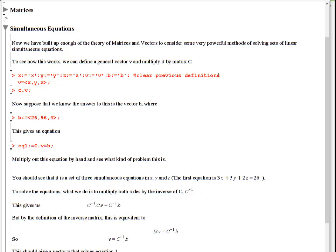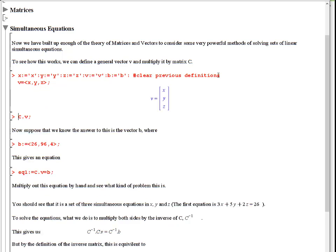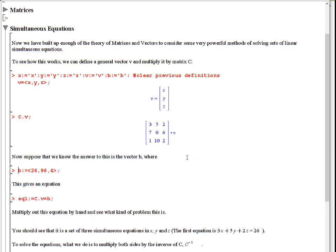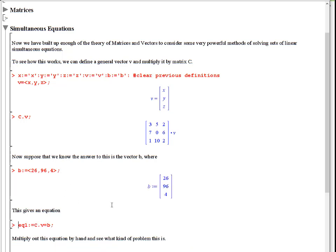So first we're going to set up an equation using a vector x, y, z, and the matrix C which we already have. And if I know that matrix C times this vector x, y, z is equal, for example, to this vector B, then you have an equation like this.